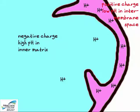On one side you have the inner matrix with a low concentration of hydrogen ions and a negative charge, while on the other side you have the intermembrane space with its positive charge and high concentration of hydrogen ions. This is our cellular battery, in a literal and completely non-metaphorical sense.